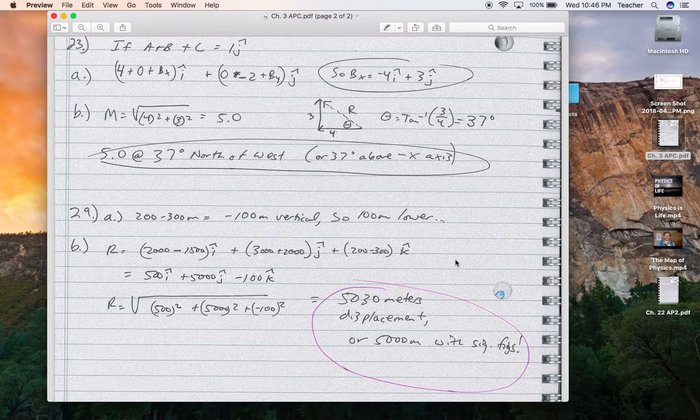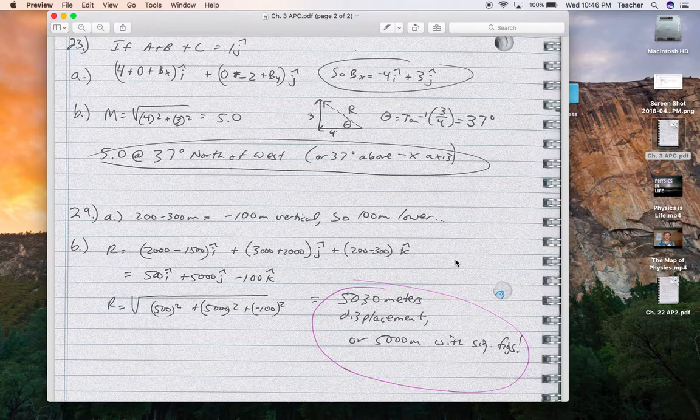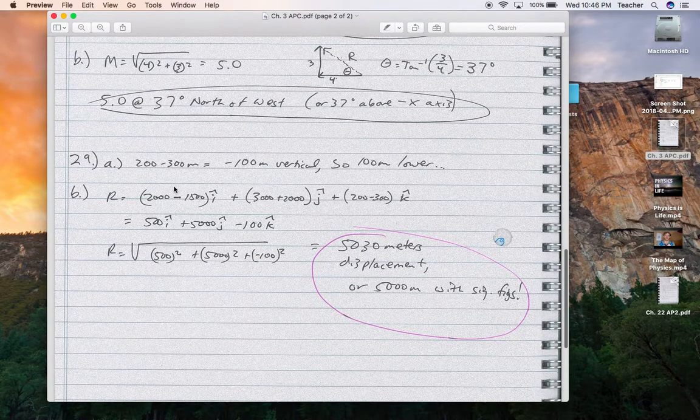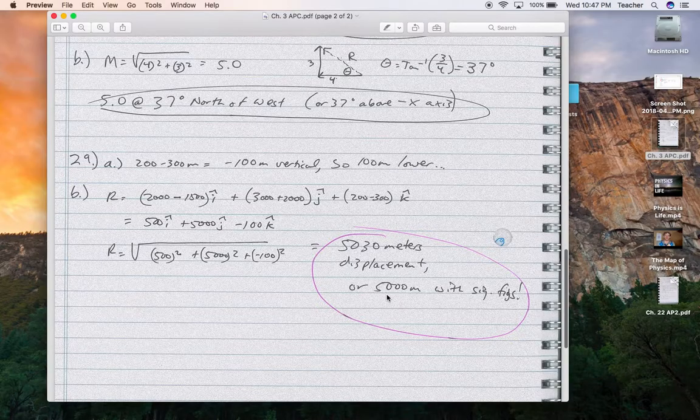29, I like that it's a little more real world, although I use the same i hat, j hat, k hat notation for east-west, north-south, up-down. In the end, the displacement was 5,030 meters, but because all these were probably actually one sig fig, so that would be one sig fig in your answer, which is 5,000 meters.